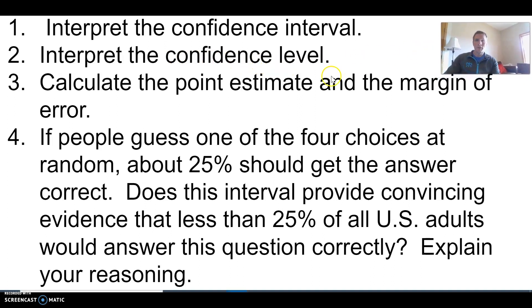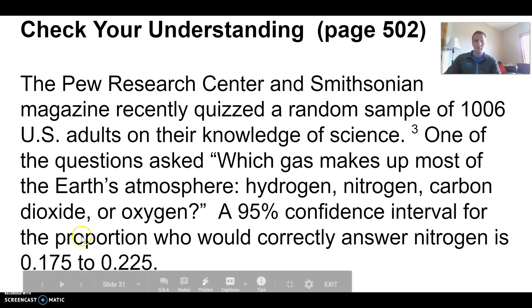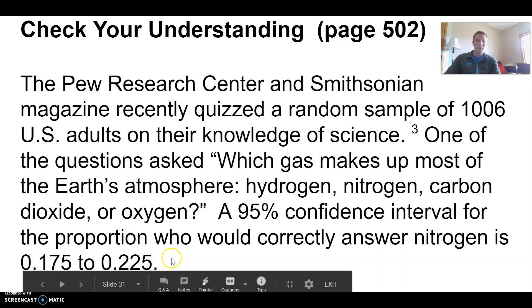And we'll calculate a point estimate and margin of error based on what we're given. You might want to write down 0.175 and 0.225 in parentheses. That's your confidence interval, and it's 95%.